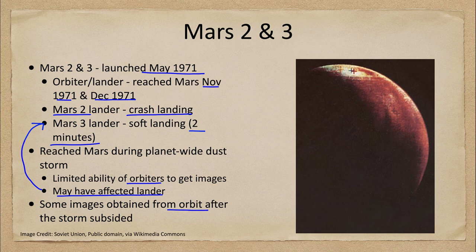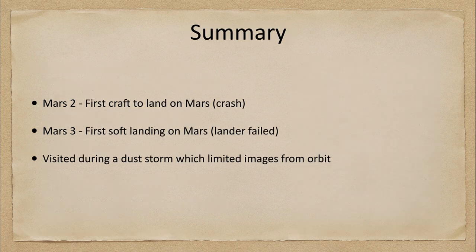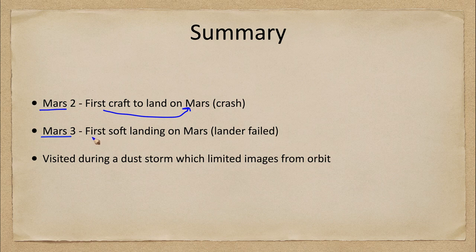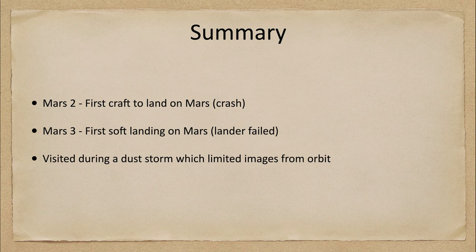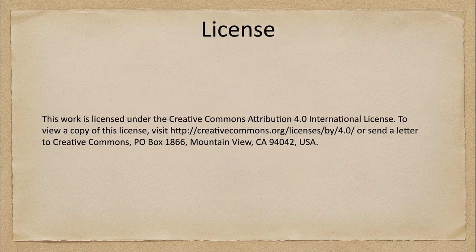Let's summarize what we looked at today: the Mars 2 and 3 craft. Mars 2 was the very first craft to land on Mars, even though it crashed. Mars 3 was the first soft landing on Mars, but the lander failed after just a couple of minutes. The fact that they visited during a dust storm limited the images obtainable from orbit until that dust storm subsided. That concludes this discussion of the Mars 2 and 3 spacecraft. We'll be back again next week for another exploration of the solar system — until then, have a great day everyone, and I will see you in class.